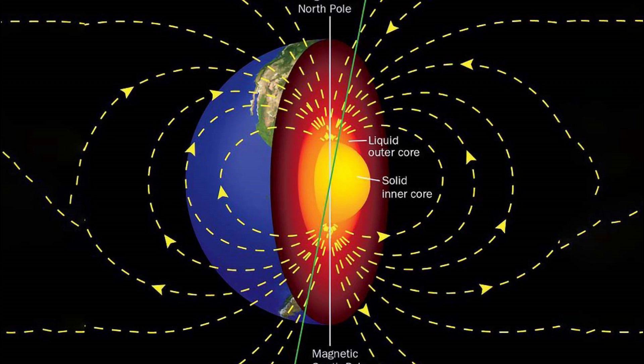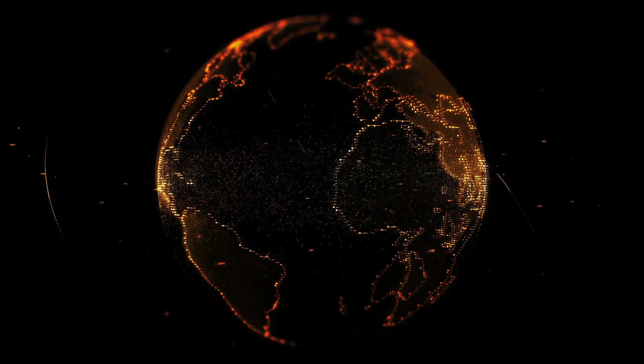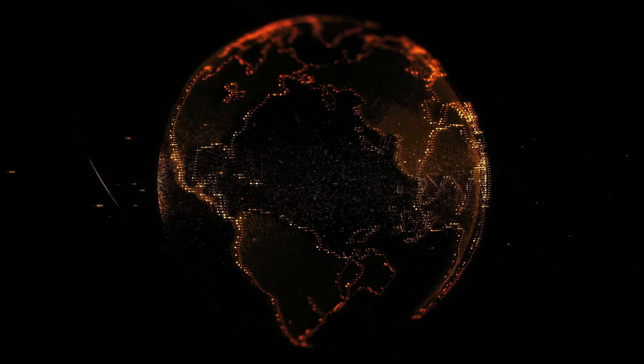The heat generated in the core is transferred to the mantle through conduction and convection. Conduction is the direct transfer of heat through solid materials; the intense heat from the core is conducted through the solid inner core and the overlying layers. In the outer core, convection currents are driven by the heat from radioactive decay and the latent heat of crystallization. These convection currents also contribute to the generation of Earth's magnetic field through the geodynamo effect.